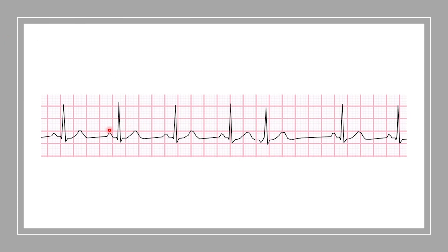We have something similar here: one P wave for every QRS complex, they're upright, the QRS complex is 0.12 seconds or less, and the PR interval is less than 0.2 seconds — so not a first degree heart block. We have what we would consider a sinus rhythm. Measuring from beat to beat, that's about 4.4 boxes, so 300 divided by 4.4 gives a heart rate at 68 beats per minute. But we have a weird abnormality again. We can't see a P wave like in the last one, and we can't see a widened QRS, so we don't think PVC — so this would be a sinus rhythm with a premature junctional complex.